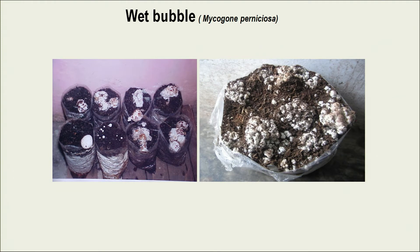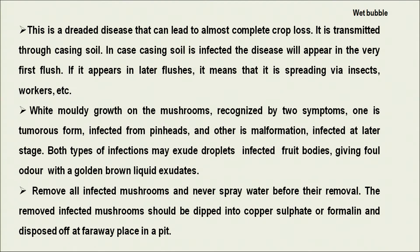Wet bubble disease is a dirty disease that can cause complete crop loss — many times 100 percent crop failure. It spreads through casing soil; if casing soil is not properly sterilized, it may be contaminated with spores of Mycogone perniciosa. If disease appears early, the entry is through the casing layer. If it appears at a later stage, it means secondary spread due to insects or workers. Initially white moldy growth appears on the mushroom, later giving a tumor shape or severely distorted fruit body with a foul smell.